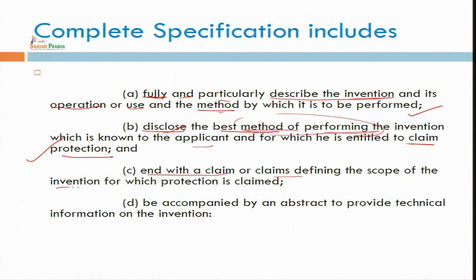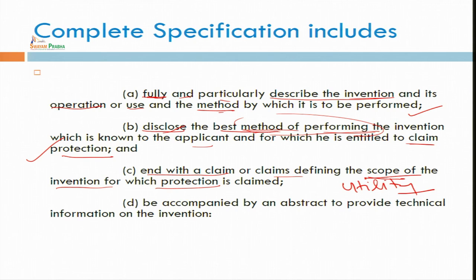With the claims, you have to provide claims defining the scope of the invention for which protection is claimed. You must give claims that define the scope and utility of that particular invention in future time — that is also related with non-obviousness. It must be accompanied by an abstract to provide technical information of the invention. As a total, you have to submit all the documents relating to this complete specification.